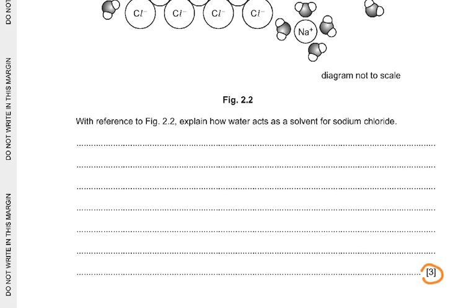Water is a polar or dipolar molecule. There is attraction between the negatively charged chloride ions and the partially positive hydrogen atoms. There is attraction between the positively charged sodium ions and the partially negative oxygen. Water molecules collect around the sodium chloride ions, ionic bonds break, and a hydration shell forms.